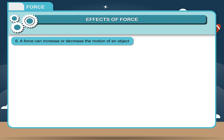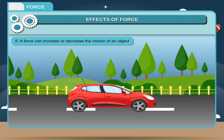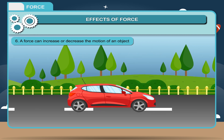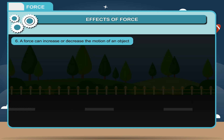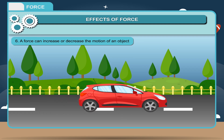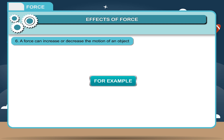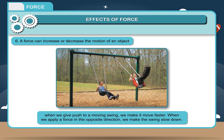A force can increase or decrease the motion of an object. When a force is applied on a moving body, it can bring about a change in the speed depending upon the direction in which force is applied. For example, when we give a push to a moving swing, we make it move faster. When we apply a force in the opposite direction, we make the swing slow down.